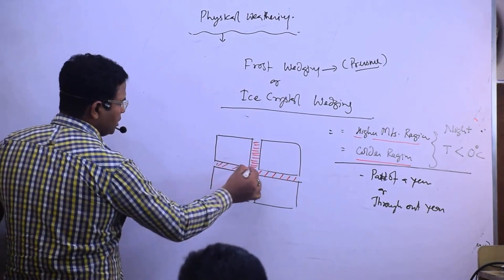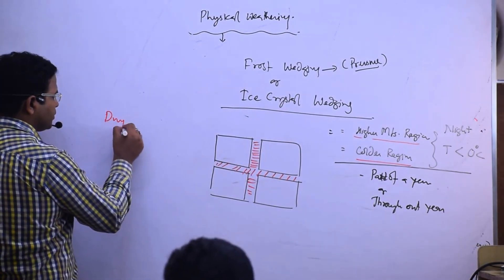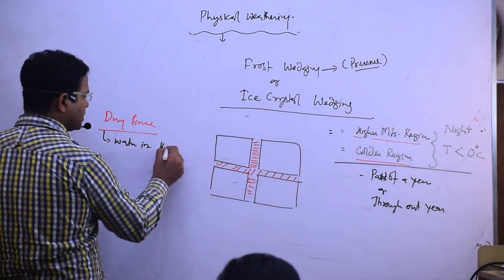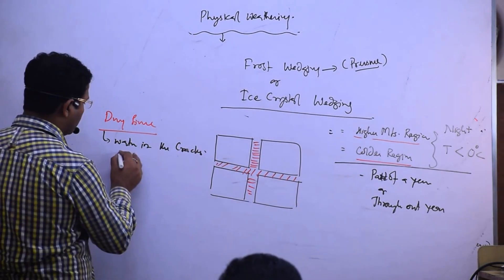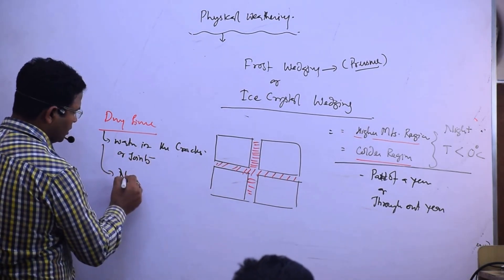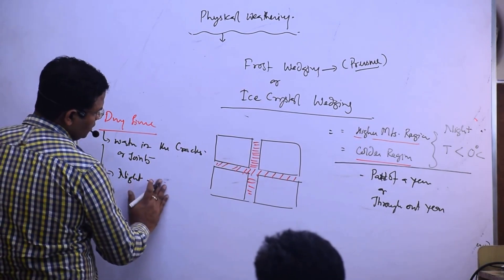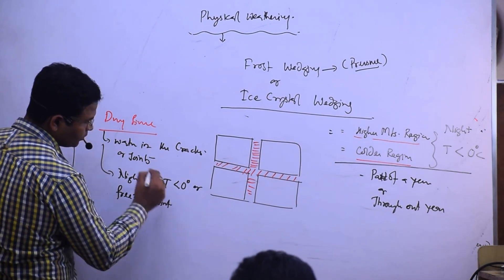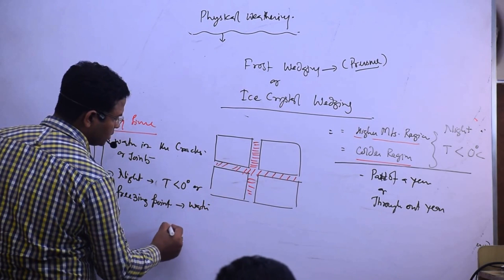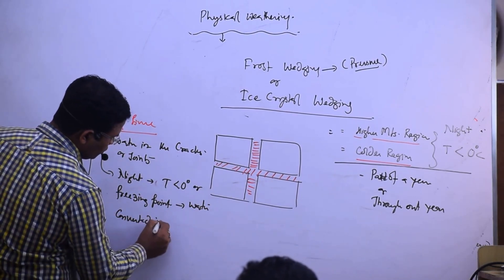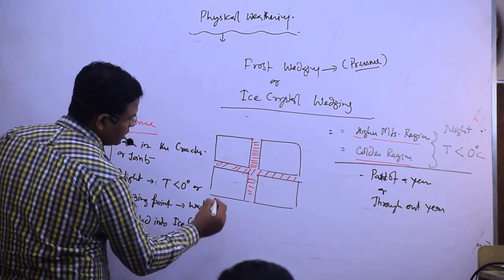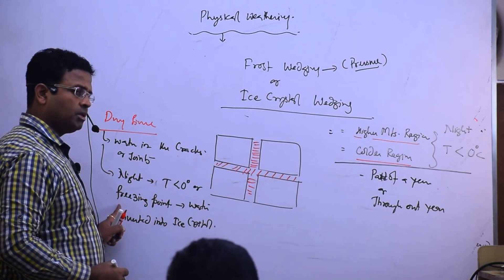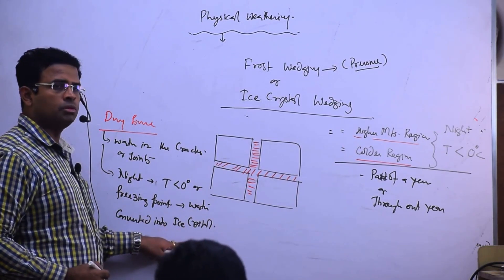In the daytime, what is there? Water in the cracks or joints. In the night, what happens? Temperature becomes less than 0 degree Celsius or freezing point. Then water converts into ice crystal. When the night temperature is less than 0 degree Celsius or freezing point, water is converted into ice.